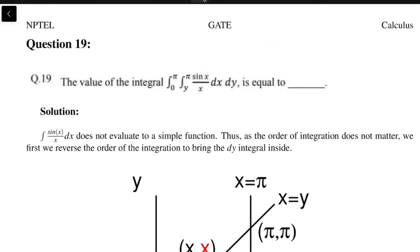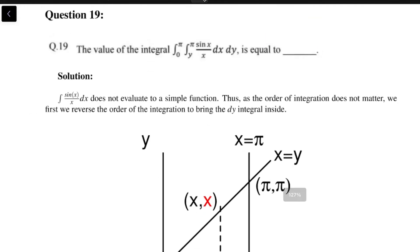So the approach here will be to try and change the order of integration to dy dx, because now if you change the order of integration, that sin(x)/x need not stay inside. This will evaluate to just x, and x and x will cancel. That will be the approach over here, so let's look at how we are going to change the limits of the integral.